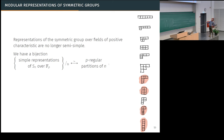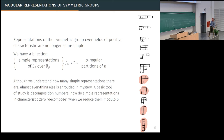We still know how many simple representations there are. The number of simple representations is the number of p-regular partitions — p-regular means no part is repeated p or more times. So for example, the partition with part 1 repeated three times is not allowed for p=3, and similarly part 2 repeated three times is not allowed. We understand how many simple representations there are, but the branching rule is incredibly complicated. If we want to understand the dimensions, we have no idea about the dimensions of the simple representations in characteristic p.